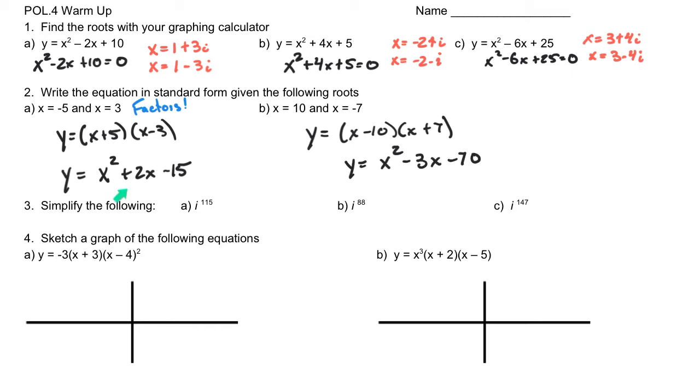you'd end up with your quadratic equation of y equals x squared minus 3x and a minus 70. And so today we're going to be looking at the relationship between these roots, these factors, and this equation in both directions, so going from roots to equation and equation to roots.